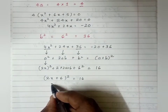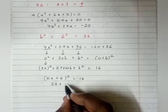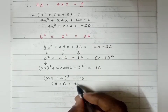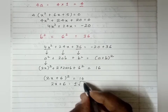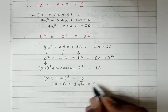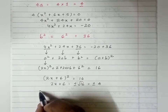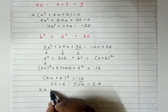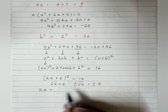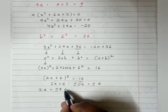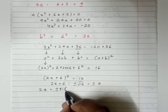Now remove the square and put a square root on the RHS. It becomes plus or minus √16, and √16 = 4, so we get plus or minus 4. Therefore 2x + 6 = ±4. Shifting +6 to the RHS gives -6.